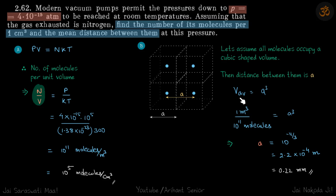The average volume occupied by the molecule is A³. That is 1 cubic meter divided by 10^11 molecules from here. From this, we get the value of A, which is our answer.